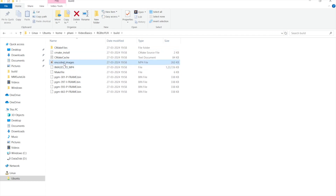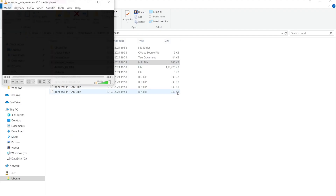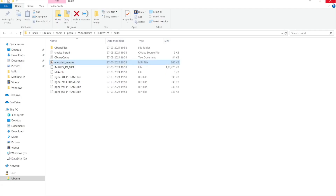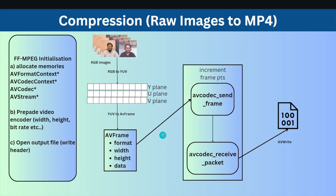This is the final output. Playing it in VLC player, you can see the first image, second image, third image, fourth image, and fifth image — each image is played for one second. Each image is kept in a loop for one second containing 25 frames. This is how we converted images into an MP4 file. To recap: we took a set of images, converted each into YUV, dumped it into AVFrame, and sent the same frame 25 times so that the image is displayed for a full second.